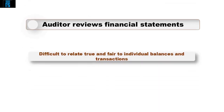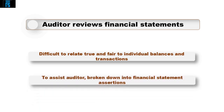However, when the auditor reviews the financial statements in detail, it is more difficult to relate the term 'true and fair' to the individual balances and transactions that make up the whole set of accounts. How can they see whether a balance is true and fair? Therefore, to assist the auditor in planning audit procedures that review whether the balance is free from material misstatement, they are given the financial statement assertions.